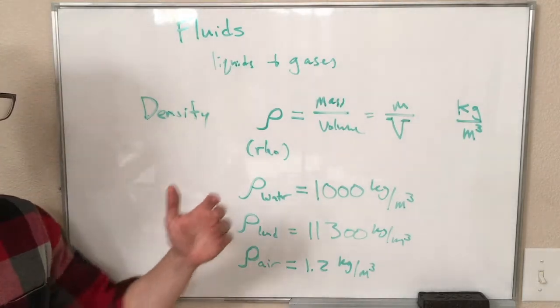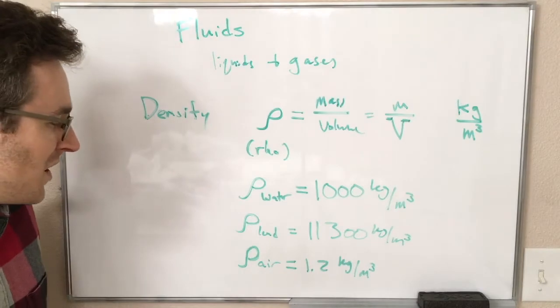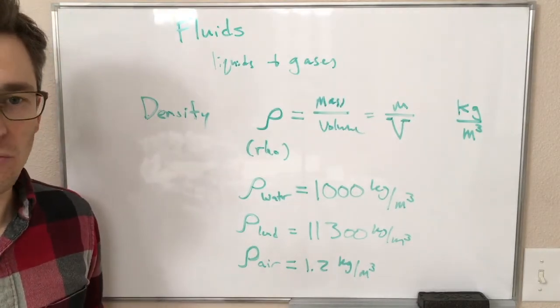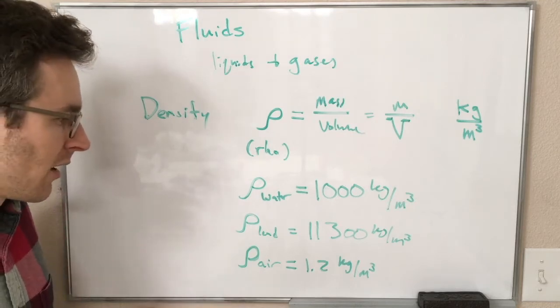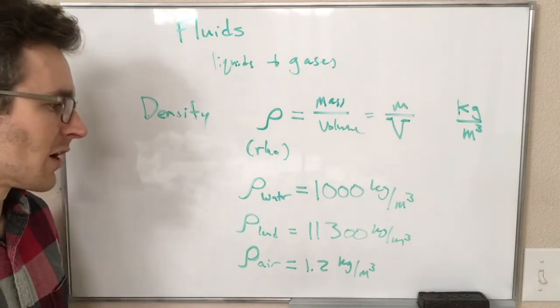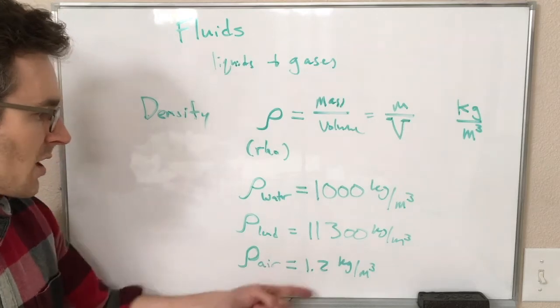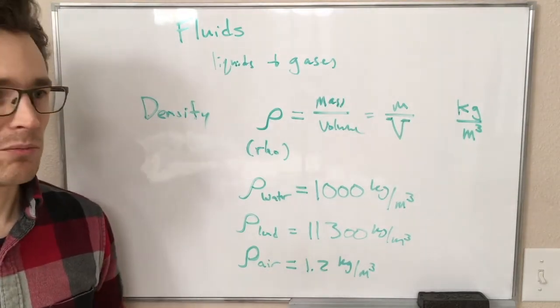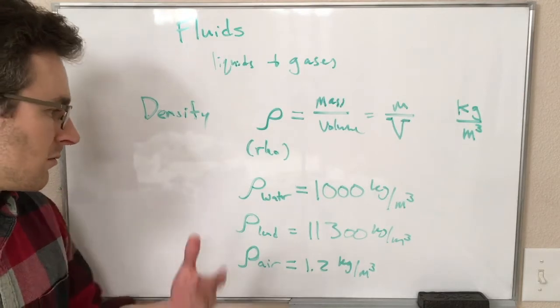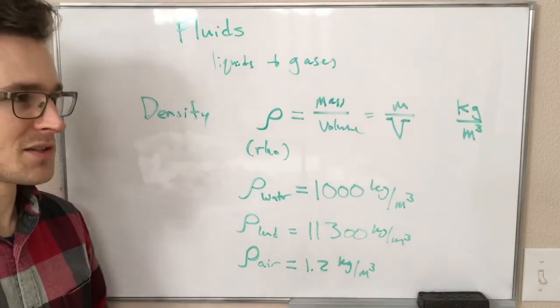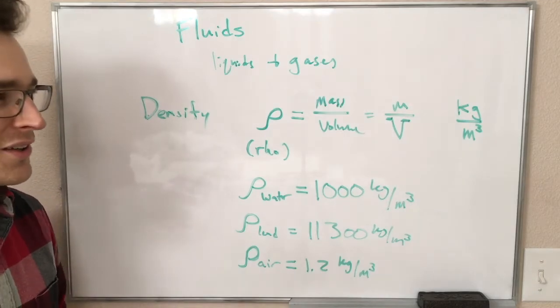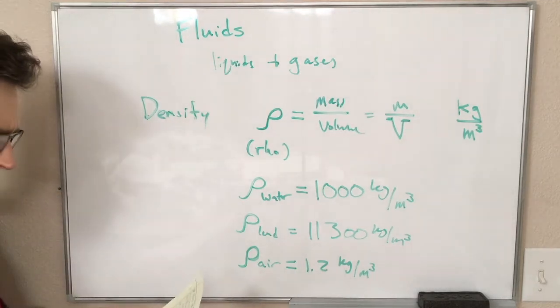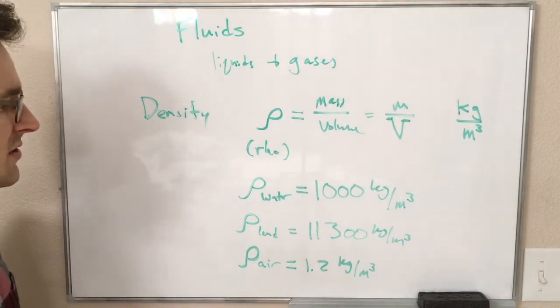The air, 1.2 kilograms is a significant amount of mass. The room we're in now has a few cubic meters of air for sure. And so we're talking about maybe five kilograms, which is maybe 10 pounds or something of air. That is enough that you would feel it if you tried to lift it up. So yeah, that's our density.